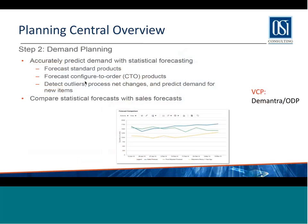The next step is demand planning — accurately predicting demands with statistical forecasting, equivalent to Demantra or Oracle Demand Planning. It forecasts standard products, configured-to-order products, can detect outliers, process net changes to demand, predict demand for new items, and compare statistical forecasts to sales forecasts. It does pretty much everything you expect a forecasting module to do. There are separate slides on demand planning so we won't go into detail in this overview.